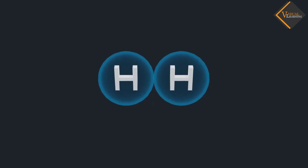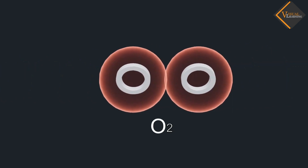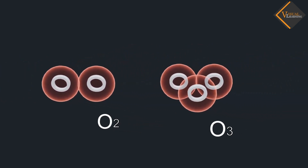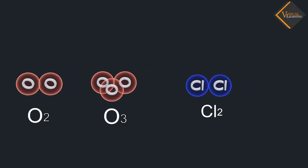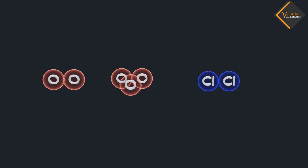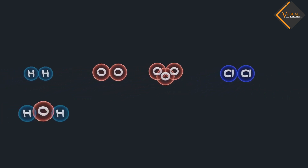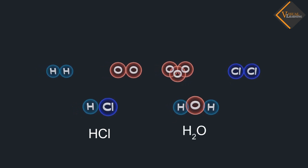For example, hydrogen forms an H2 molecule. Oxygen forms an O2 molecule and an O3 molecule. Chlorine forms a Cl2 molecule. These atoms can also combine with each other to form molecules of a compound like HCl or H2O.